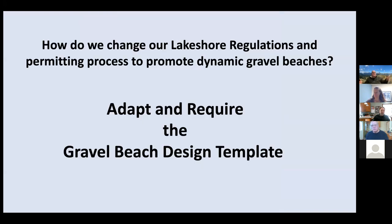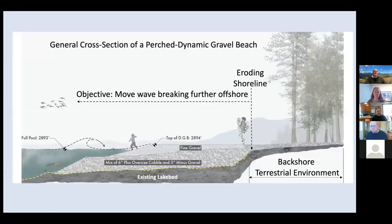So how do we change our regulations? We need to adopt and require the gravel design beach template. The first part allows one to demonstrate how severe the erosion problem is. Natural gravel beaches don't all have to be big cobbles — it can be pea gravel and sand, or even oyster shells. The whole gravel beach template shows how we move waves further offshore and maintain a gravel beach: how much material, how thick, and what grain size distribution is needed.